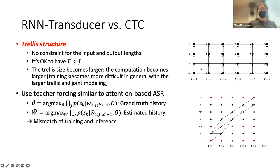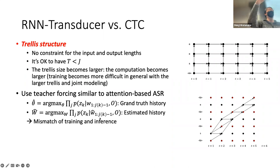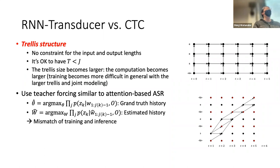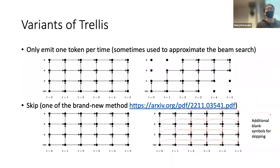Because RNN Transducer and attention condition on token history, during training they use ground-truth history while during inference they use estimated tokens — a mismatch that causes performance differences. We should be careful not to over-tune these models from a teacher-forcing perspective. The lattice structure of RNN Transducer is not unique; there are many studies on this, and some papers are listed for reference.